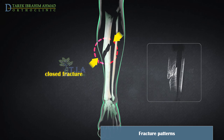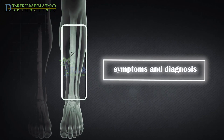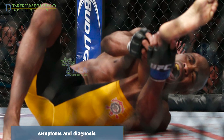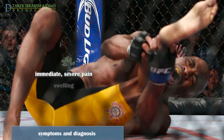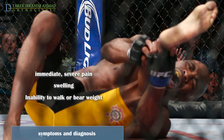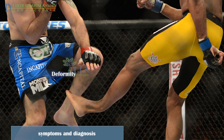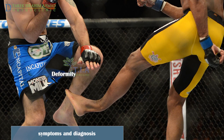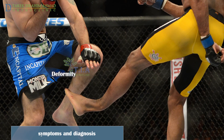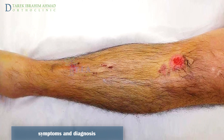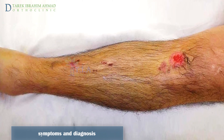In a closed fracture, the bone is broken but the skin is intact. Symptoms and diagnosis: a tibial shaft fracture usually causes immediate severe pain, lower leg swelling, and inability to walk or bear weight on the leg. Significantly displaced fractures can lead to a deformity or instability of the leg, bone tenting over the skin at the fracture site, or bone protruding through a break in the skin.